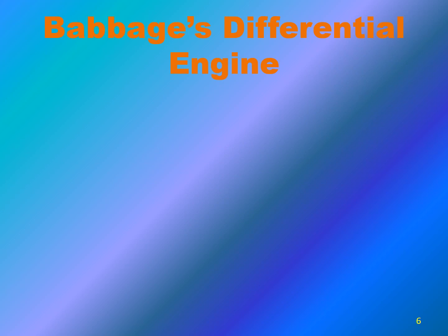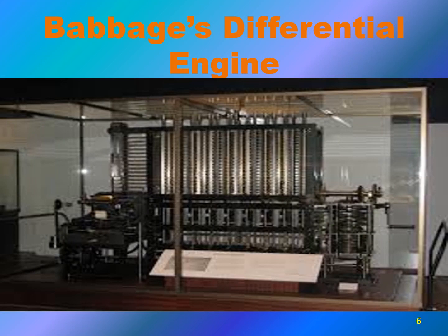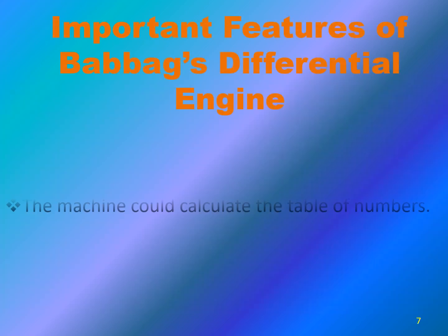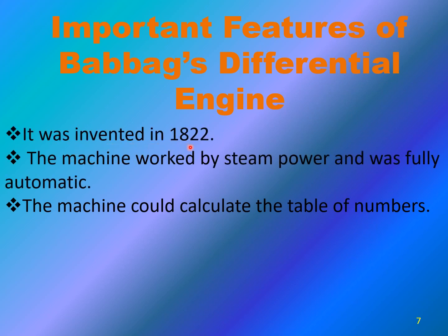After Jacquard's Loom, hamare paas Babbage's Differential Engine aaya — it was a great invention of the time, which was made by Babbage. Yeh machine ka volume aur weight bohat zyada tha, yeh easily portable nahin thi. However, despite all these disadvantages, it was a great invention. Isko 1822 ke andar invent kiya gaya, aur yeh machine steam power ke zariye kaam karti thi. Yeh fully automatic thi — ek dafa input dene ke baad dobara interaction ki zaroorat nahin thi. The machine could calculate tables of numbers, aur yeh ek bohat bara feature tha.